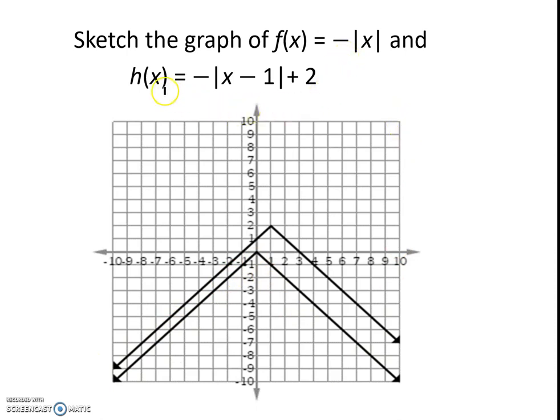Now we have h(x), and they did a little more with that. They took x minus 1, which means we move it over 1, positive 1 on the x-axis.